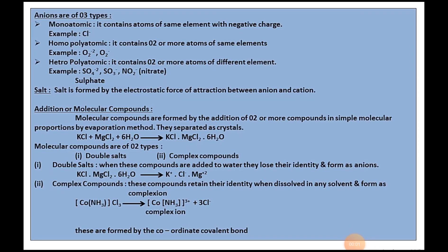Now coming to anions classification. Anions are classified into three types: monoatomic anion, homopolyatomic anion, and heteropolyatomic anion. Monoatomic anion contains atoms of the same element with negative charge. You can see only one single element, that is Cl minus.